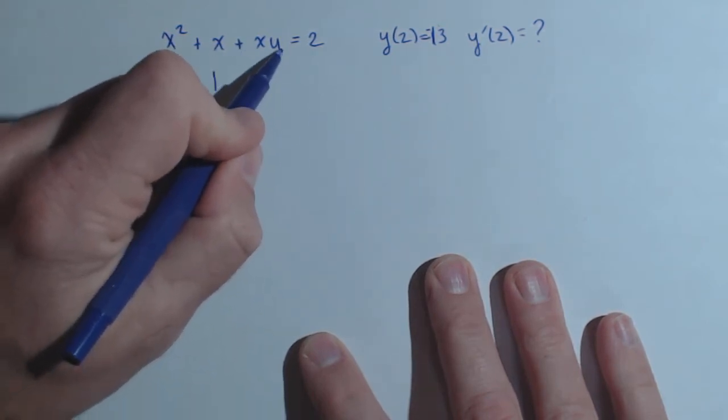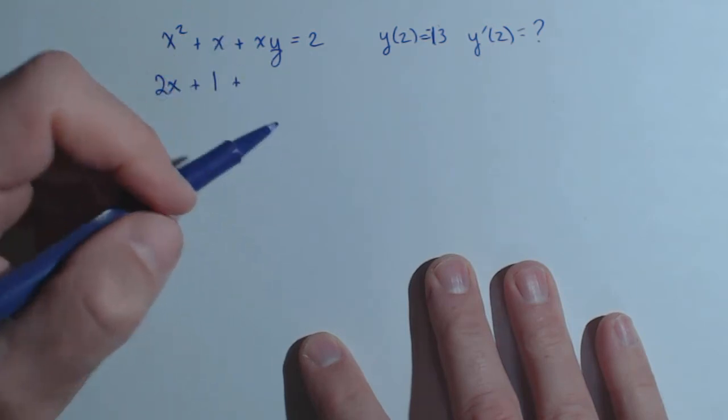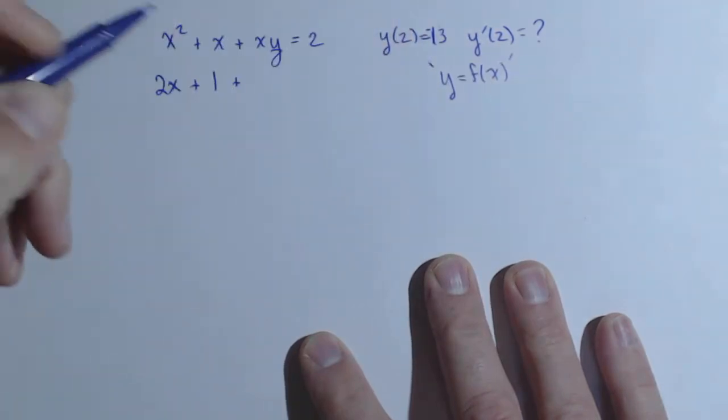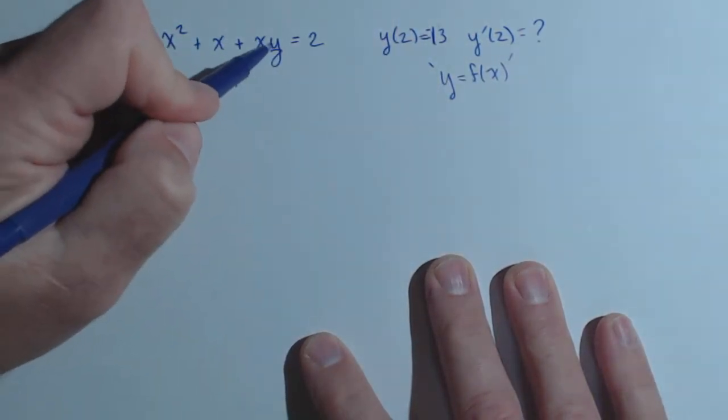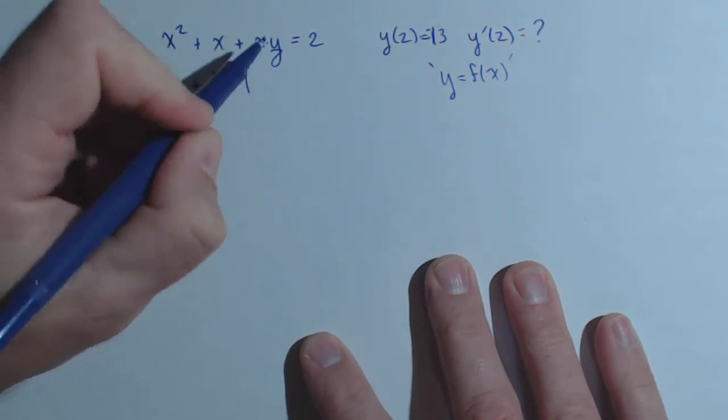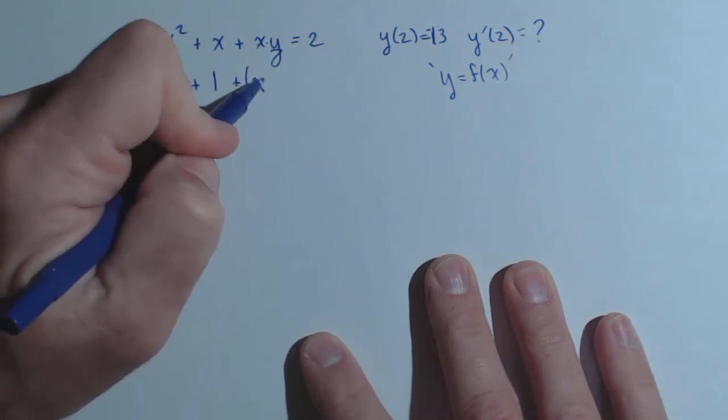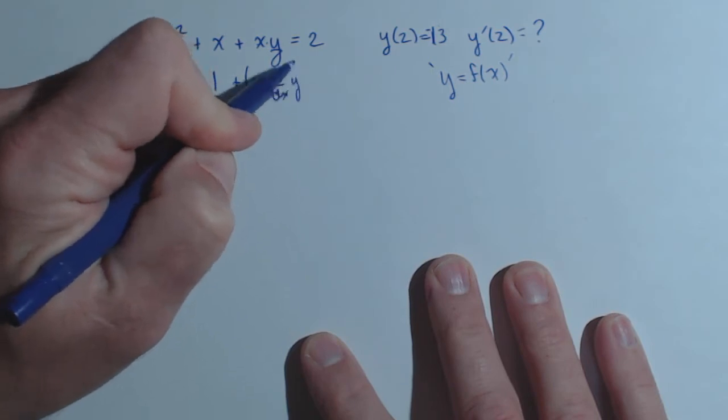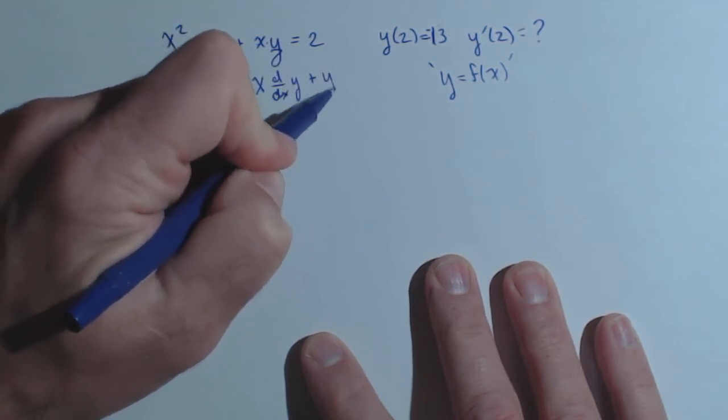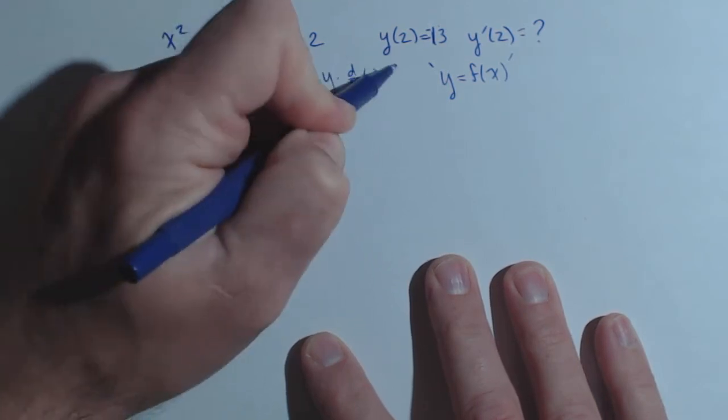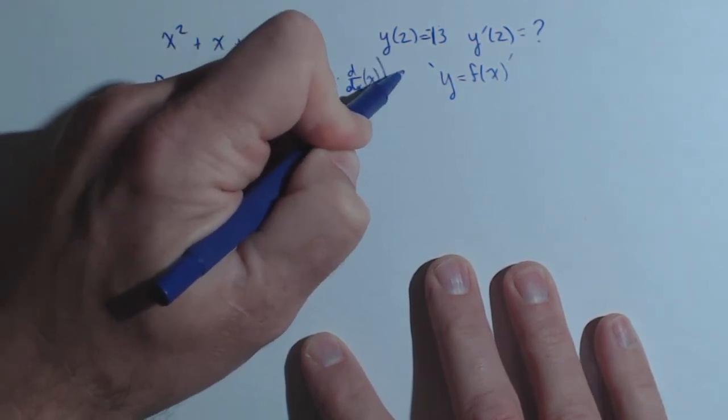It's when we take a derivative of a y term that things get a little bit interesting because we're thinking of y as some kind of implicit function of x. So when we do this, this is going to actually be a product rule, x times y. So it's going to be x times the derivative with respect to x of y plus y times the derivative with respect to x of x. And then over on the right-hand side, derivative of 2, a constant by itself, is just 0.